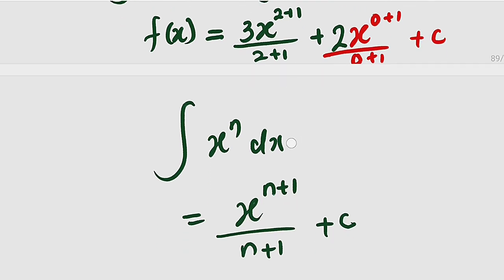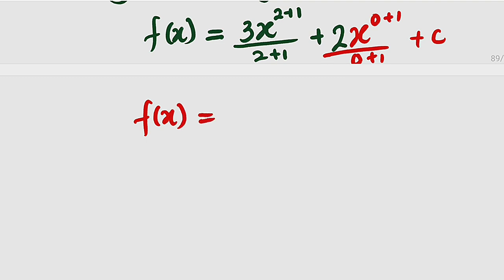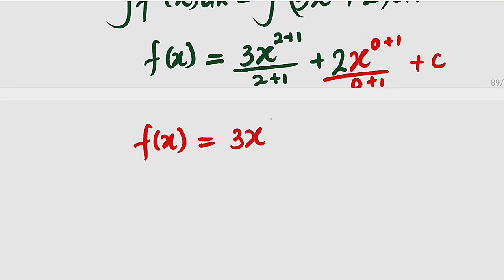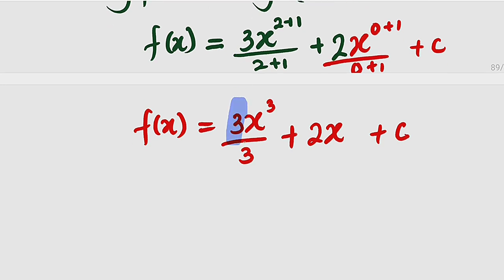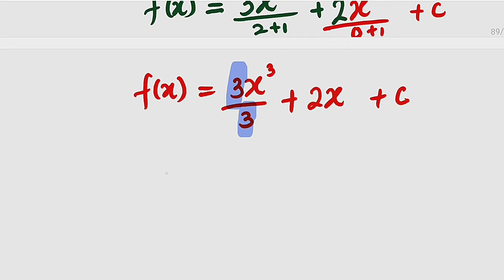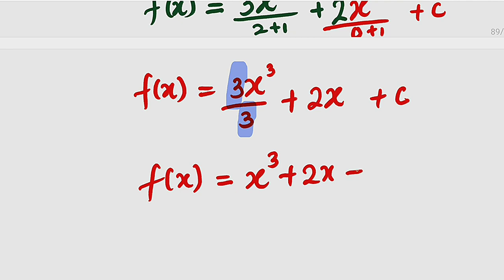Let us simplify. f of x is now equal to: 3x to the power of 2 plus 1 is 3, divided by 2 plus 1 is also 3, plus 2x to the power of 0 plus 1 is 1 — so we don't even have to write it — divided by 0 plus 1 is also 1. Dividing by 1 will not change anything, plus the constant of integration. You can see clearly that this 3 will cancel this 3. Finally, we have f of x equal to x to the power of 3 plus 2x plus c.